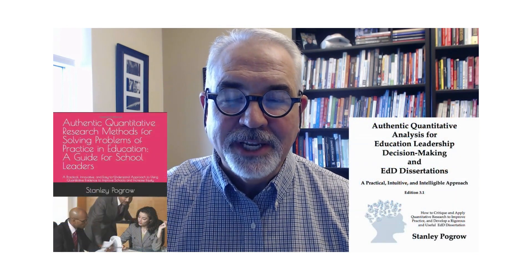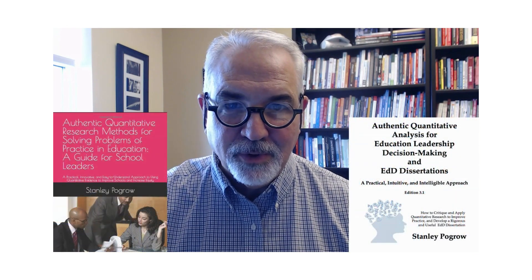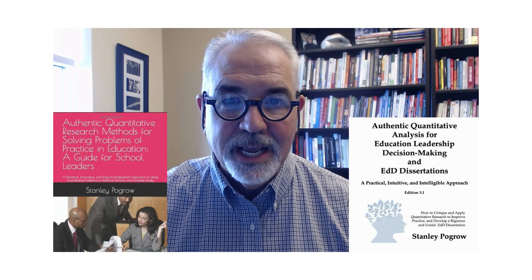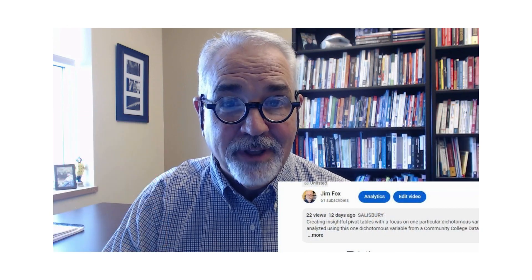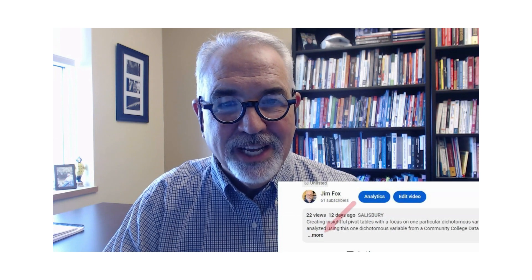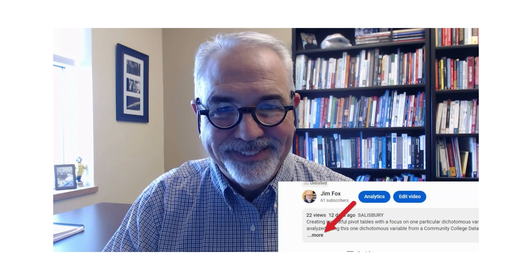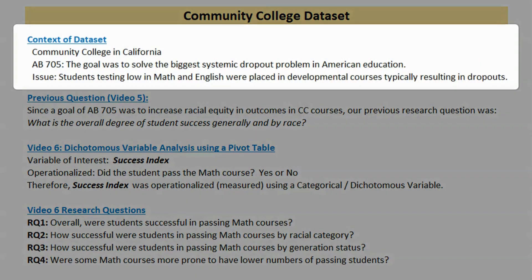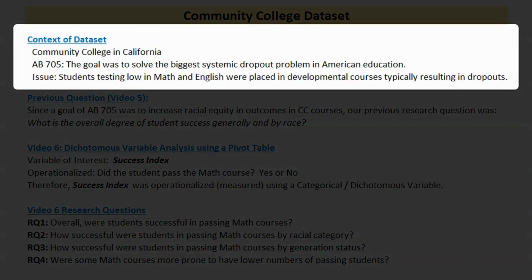Hi, Dr. Jim Fox here. As a reminder, these videos are made in support of Dr. Stanley Pogro's Authentic Textbook Series. Links to these books, as well as the data set that will be used in this video, can be found in the description below — just click on More. As a way of introduction, I want to provide some context to this data set. It's from a community college in California, and if you recall from video 5, I discussed AB 705.